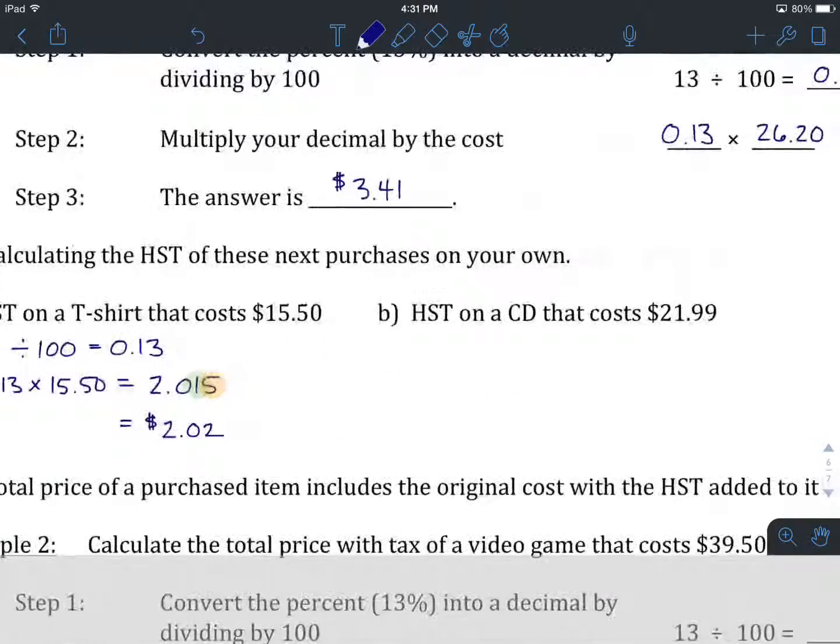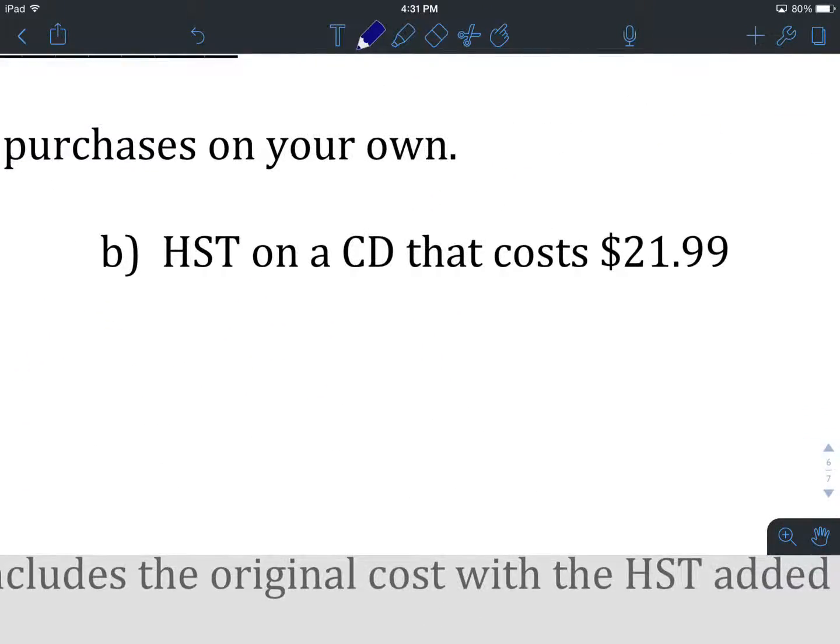Let's get you guys to try B here on your own. I'd like you to hit pause. The steps are to convert your HST percent into a decimal, multiply that decimal by whatever the cost of the item is, and then make sure that you round it to the appropriate place value, which, when we're talking about money, is going to be cents. Hit pause, give this one a try, and come on back, and we'll see how you did.